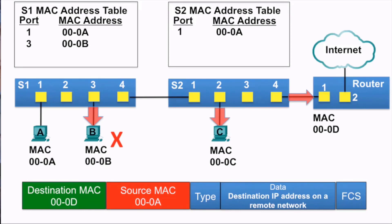PCC gets the Ethernet frame, and because the destination MAC address does not match its own MAC address, it does not accept the rest of the Ethernet frame. The router receives the Ethernet frame, and because the destination MAC address does match its own MAC address, it accepts the rest of the frame.